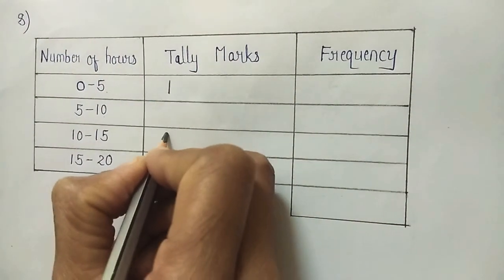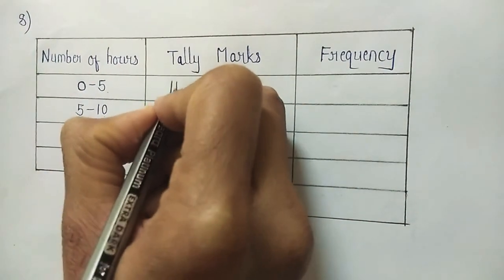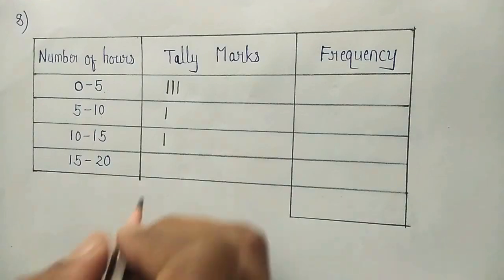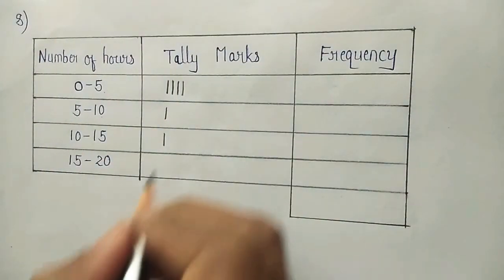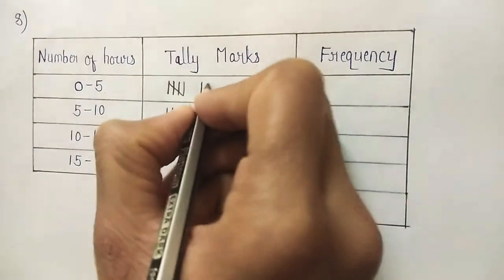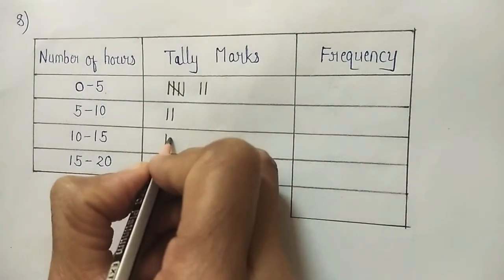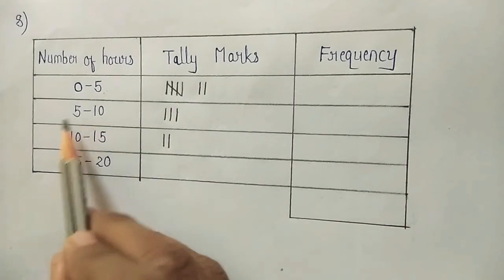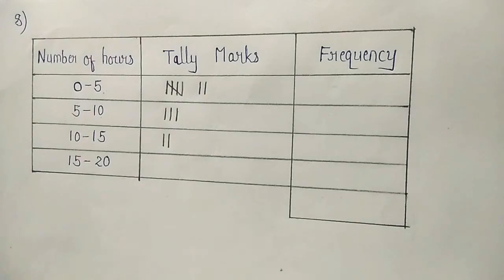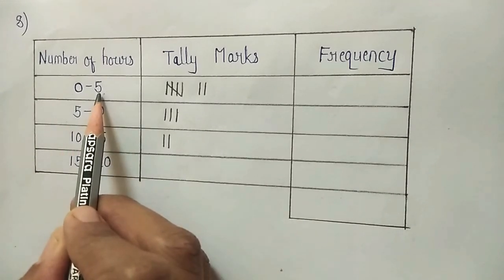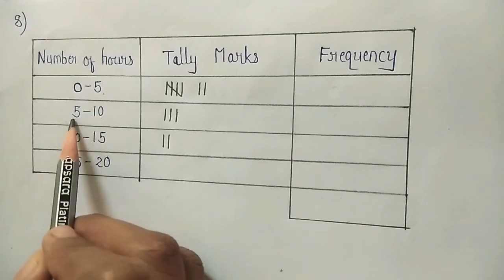We go through the data values: 1, 10, 3, 6, 3, 2, 2, 4, 8, 3, 12, 5. Now see — 5 goes into which class? 5 to 10. Where a value equals the lower limit, it is included in that class. Where it is the upper limit, it is not included. So 5 is included in the class 5 to 10.